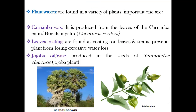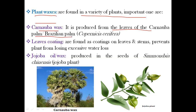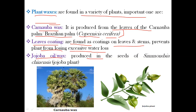Plant waxes are found in a variety of plants. An important one is carnauba wax, produced from the leaves of the Brazilian palm Copernicia cerifera. Waxes are also found as coatings on leaves and stems, preventing plants from excessive water loss. Another example is jojoba oil or wax, produced in the seeds of the jojoba plant.